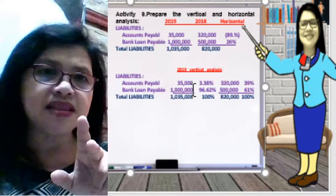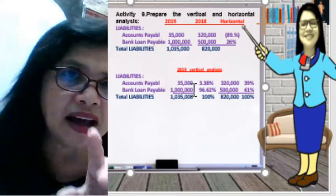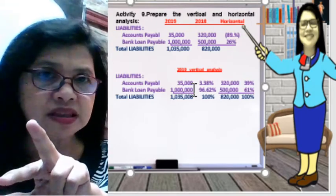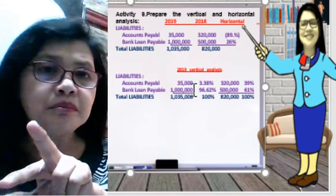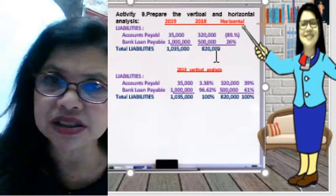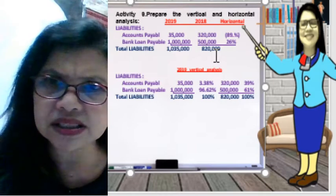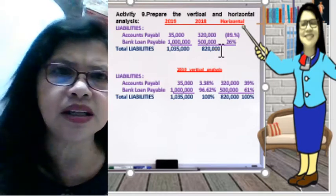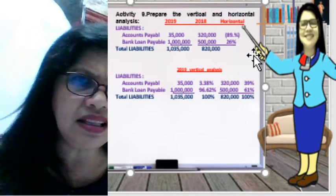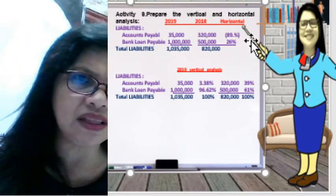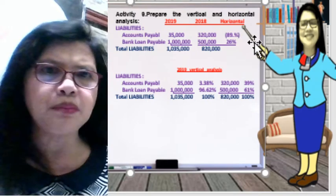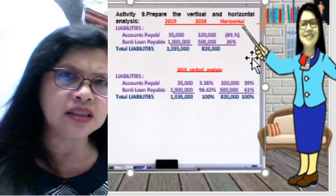We get the peso change: current year 35,000 minus previous year 320,000, divided by 320,000. The result is negative — I believe it's around 89.5%.